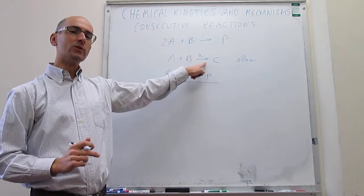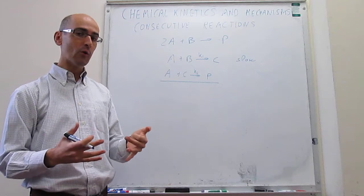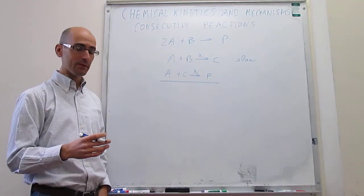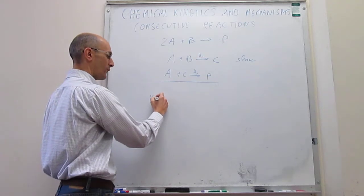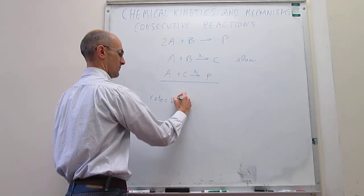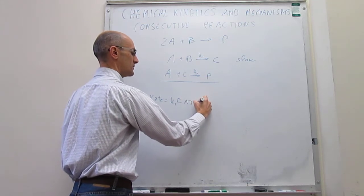Because the slow step is going to determine the overall rate, then we can write the overall rate law for the reaction simply as the rate law for this particular step. So the rate law for the overall reaction will be simply K1, concentration of A, concentration of B.